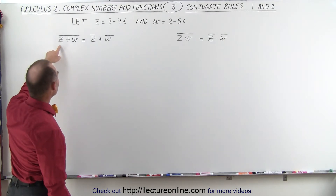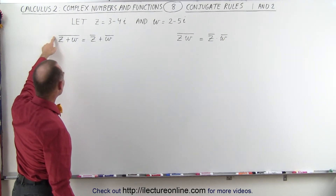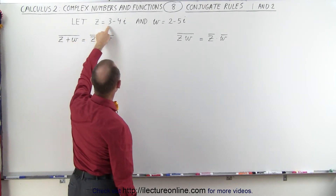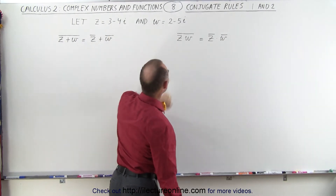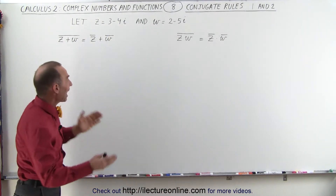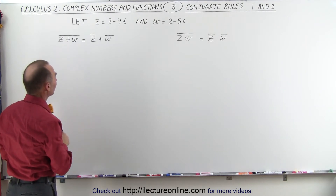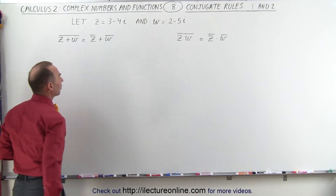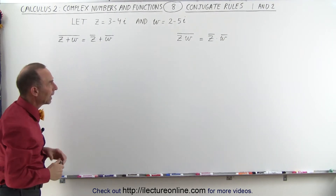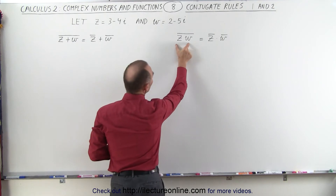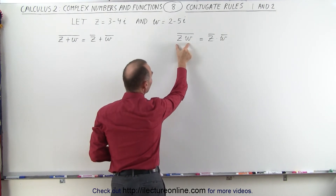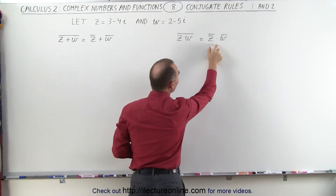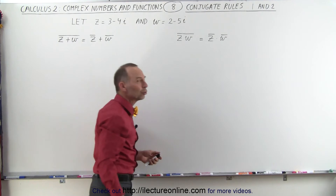We claim that if we take the conjugate of the sum of two complex numbers — where z is 3 minus 4i and w is 2 minus 5i — if we first add them together and then take the conjugate of that sum, that is equal to the conjugate of z added to the conjugate of w. Likewise, when we first multiply two complex numbers together and then take the conjugate, that is equal to the product of the conjugates of the two complex numbers.